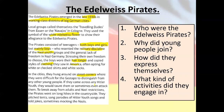If they came across Hitler Youth they would taunt or attack them. They often went on long hikes and camping trips in the countryside to get away from the cities, pitching tents, singing around campfires, and singing parodies of Hitler Youth songs — making jokes and mocking the Nazis.